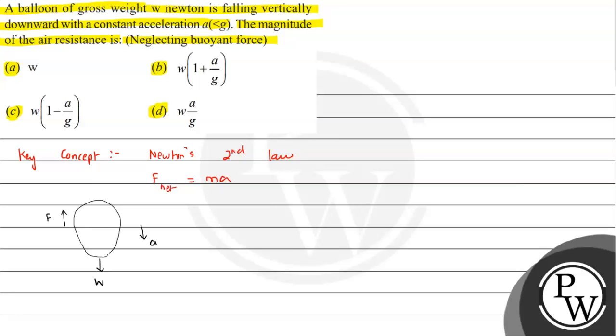So let's say f. So by Newton's law we can write F_net equals ma. So we can say w minus f will be equals to m into a.